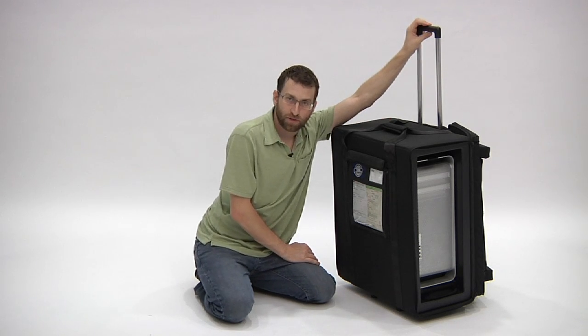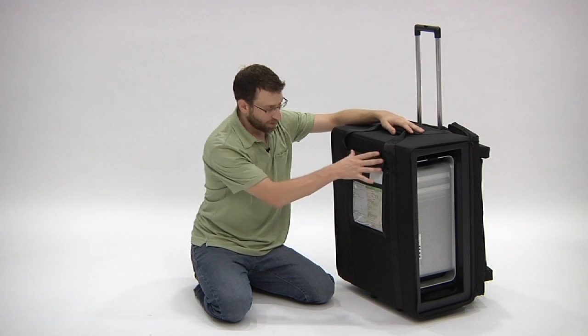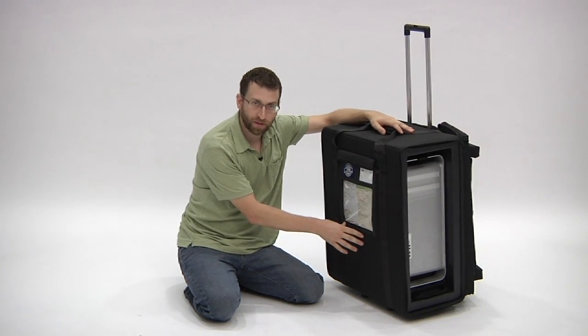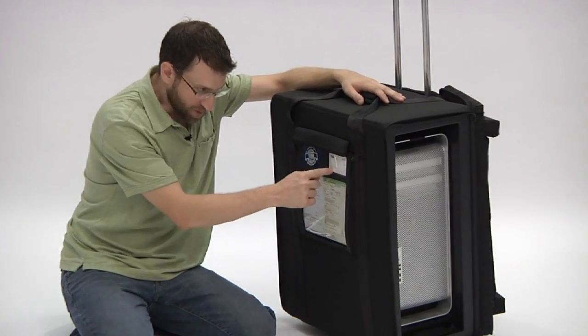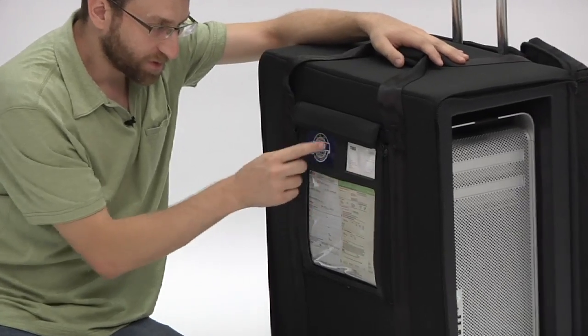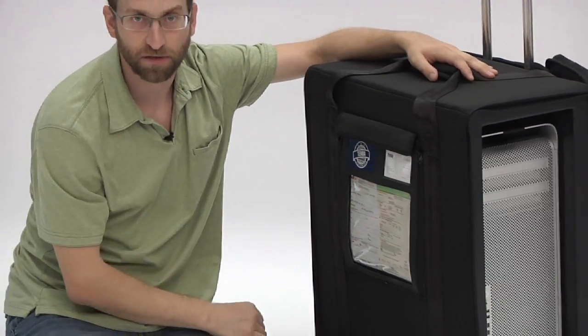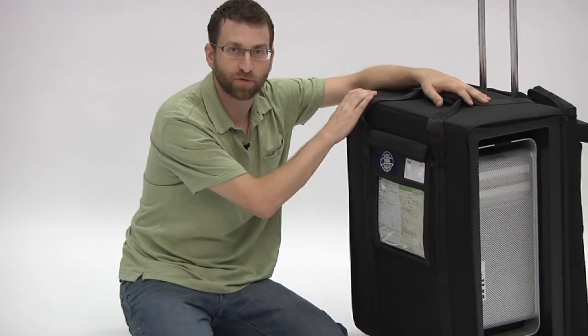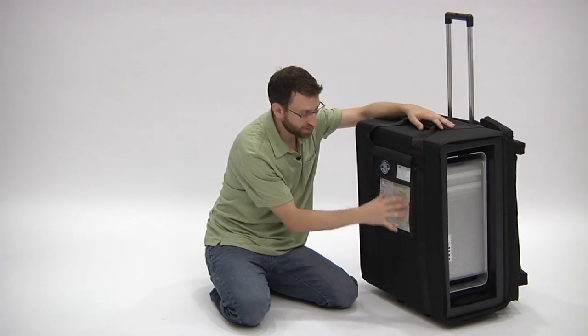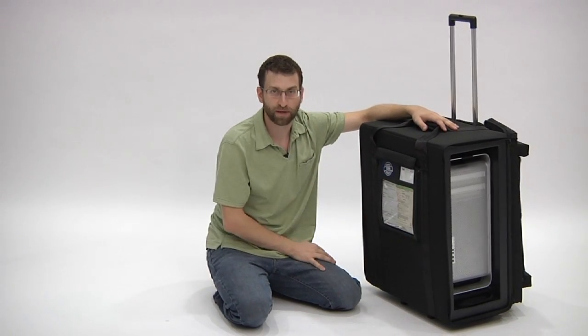We have a heavy duty U.S. made wheel system. Our exclusive data panel on the front, the three-point identity solution. There's a space right here for business cards, a space for a custom laser engraved plate that's available in five colors. And when you buy the case, there's an order form inside to get the laser engraved plate done for you. And then a space here for an international waybill.